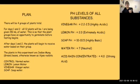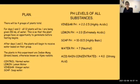Here's the pH level of all the substances involved. The pH level of vinegar is 2.2 to 2.5, which is highly acidic. The pH of pure lemon juice is 2, which is extremely acidic. The pH level of soap is 10 to 10.5, which is highly basic. And the pH level of water is 7, neutral. The pH level of acid rain can vary, but most of the time it's around 4, which is a strong acid.